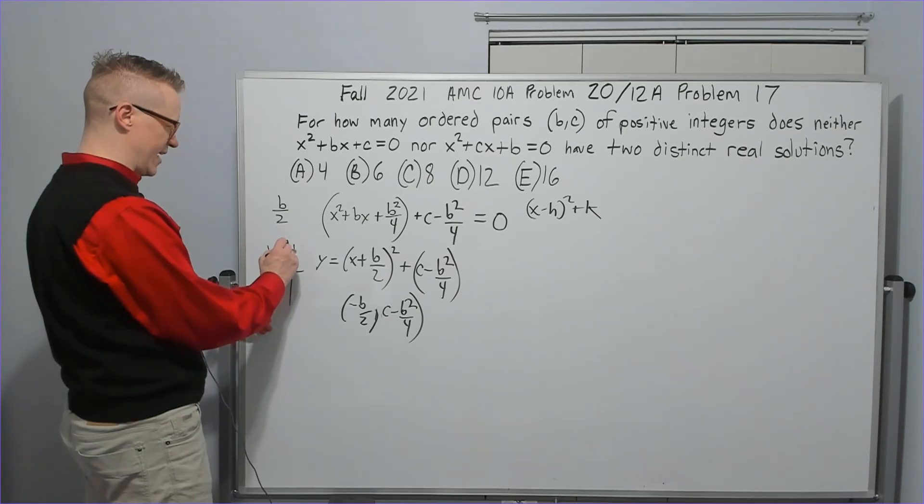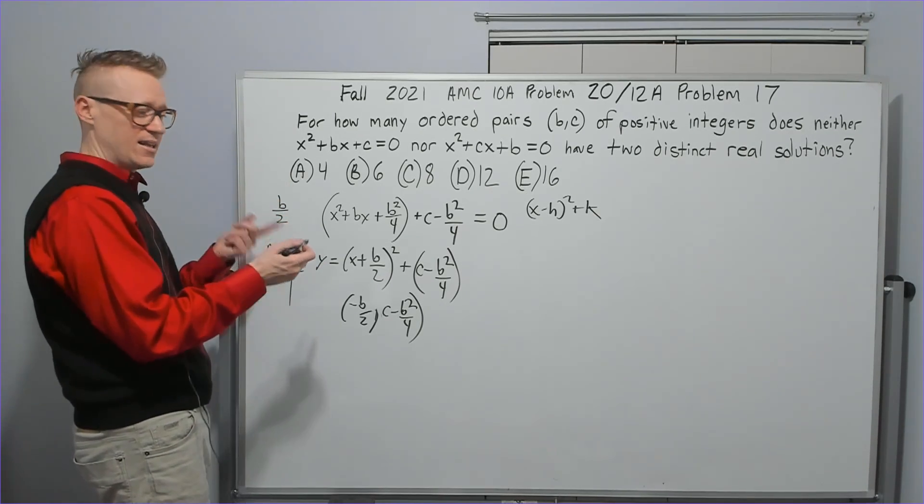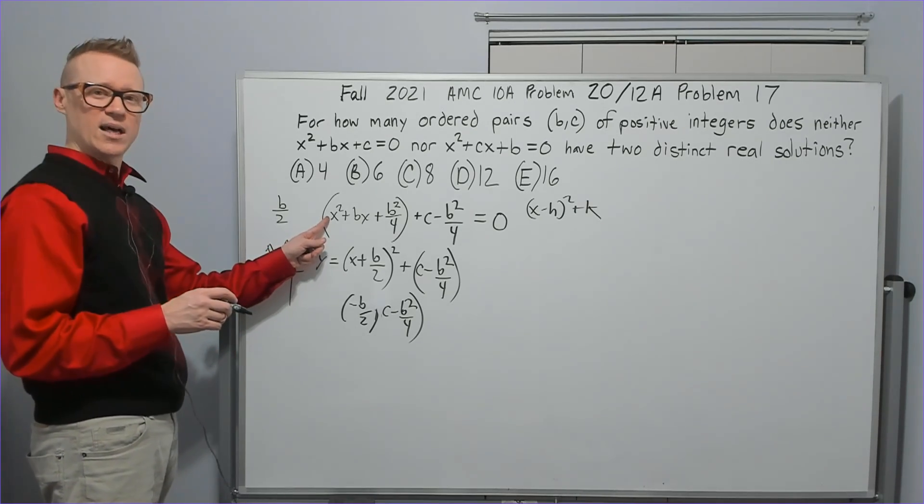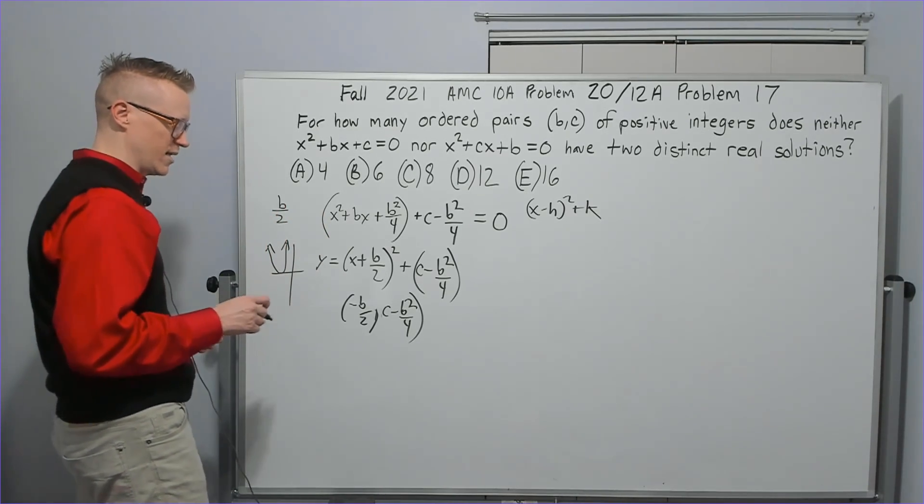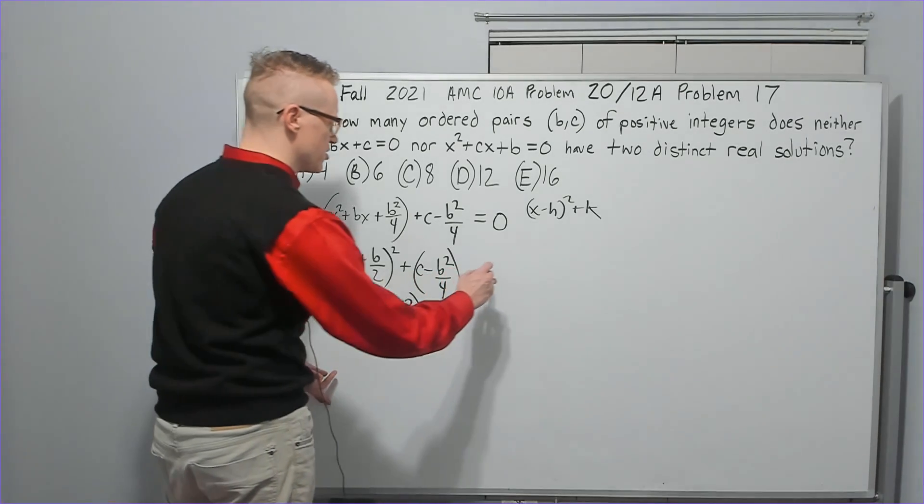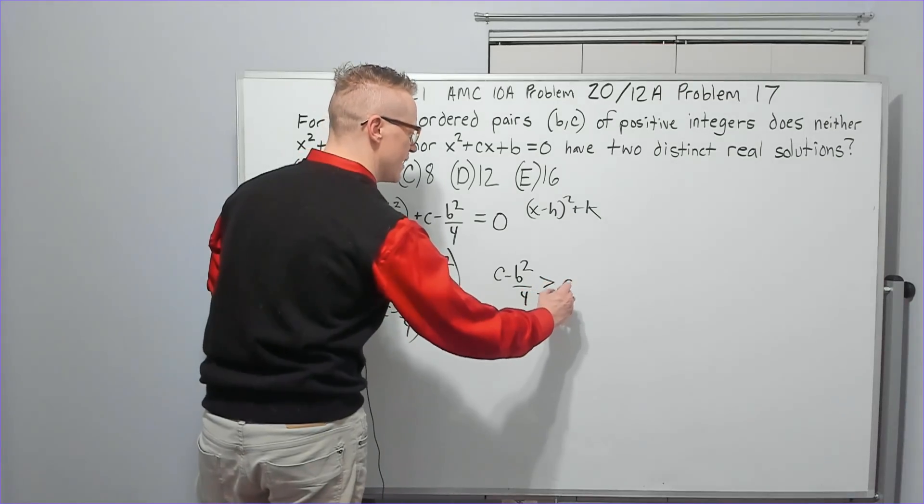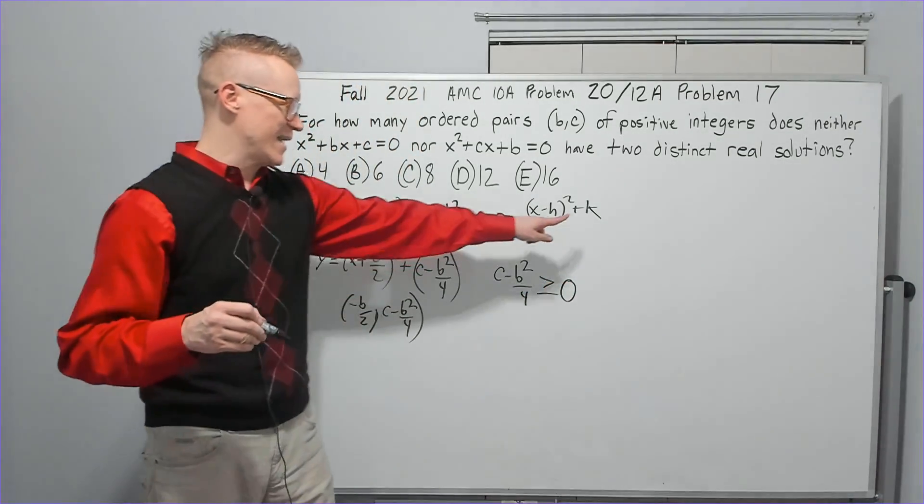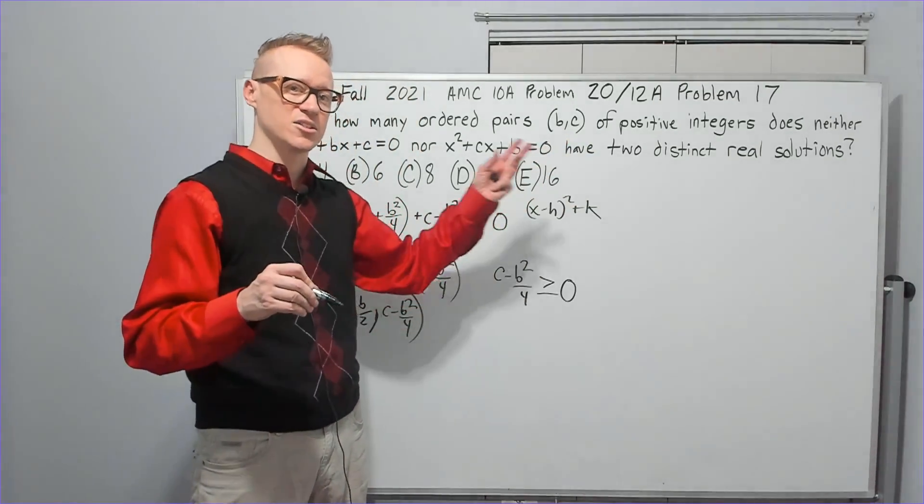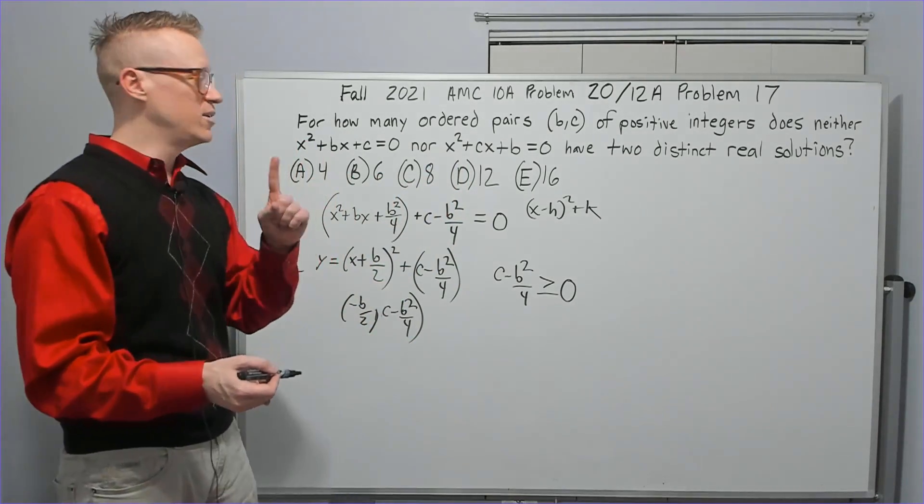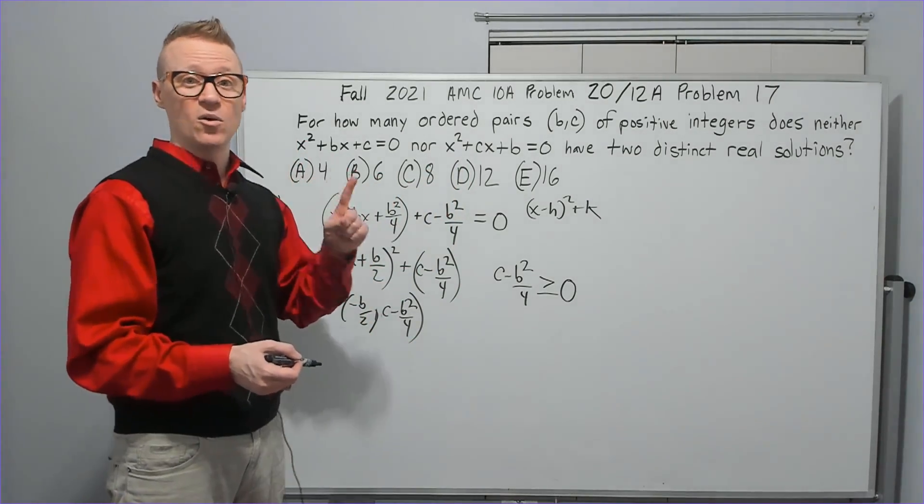And it's definitely going up because the coefficient is 1 for the x squared term. So I need c minus b squared over 4 to be greater than or equal to 0. Again, that's the k value of our vertex, greater than or equal to the x-axis. That way you only get 1 or 0 solutions.